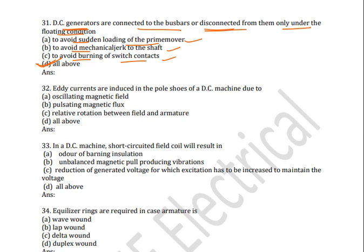Regarding floating condition — floating condition means the induced voltage in the generator equals the bus bar voltage, so no load will be delivered and it will be disconnected from the bus bar. If the induced EMF is more than the bus bar voltage, then only it will be connected and load will be delivered.